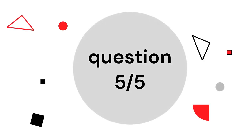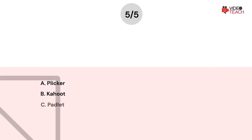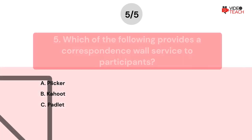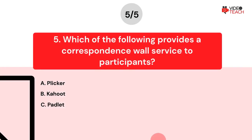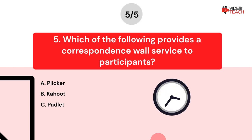Question number five. Which of the following provides a correspondence wall service to participants? Option A: Clicker. Option B: Kahoot. Option C: Padlet. Now you have about 15 seconds to think about your answer.